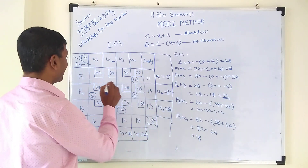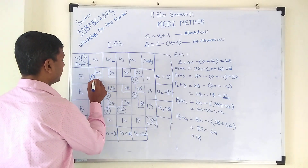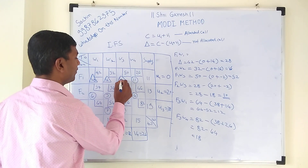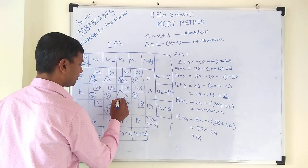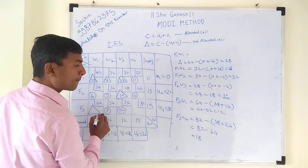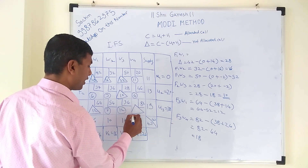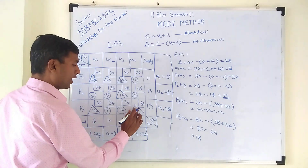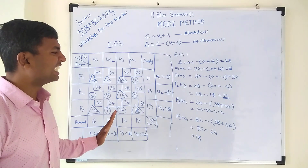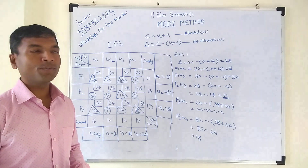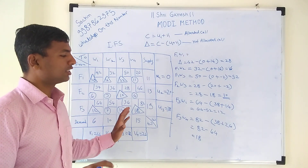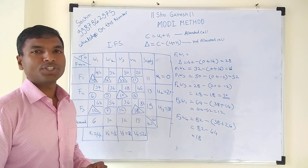All the delta values are: 28, 16, 52, 10, 12, 18. Since all delta values are positive, this solution is itself the optimum solution. When no delta value is negative, there is no need to perform any further iterations — this is the optimum solution and the final transportation cost.